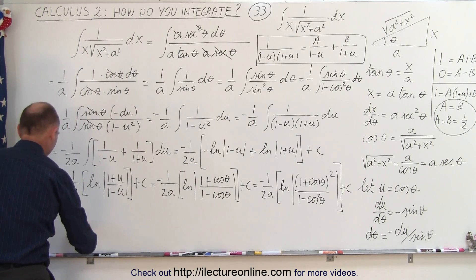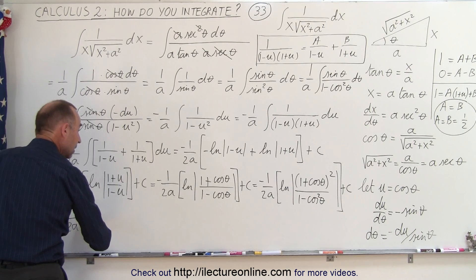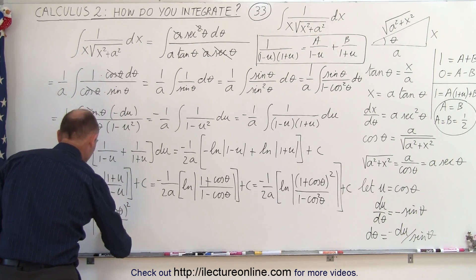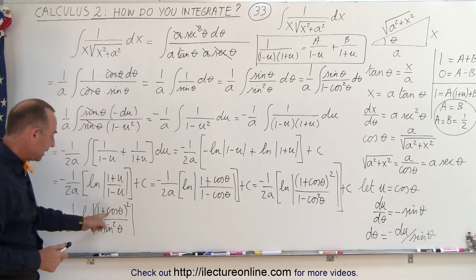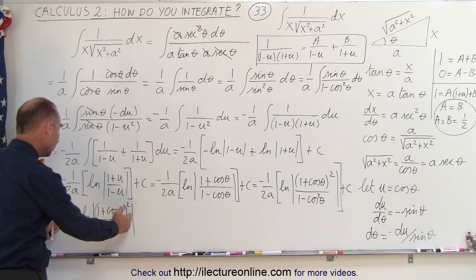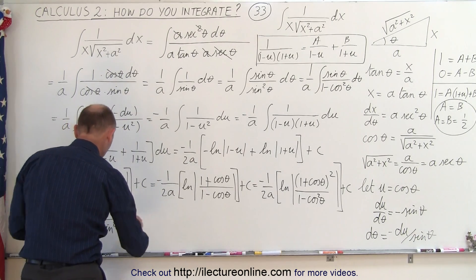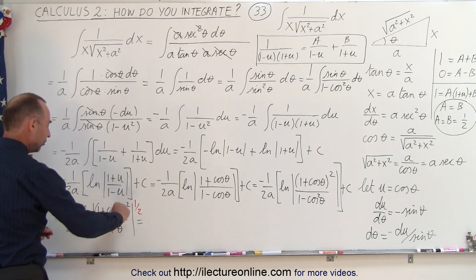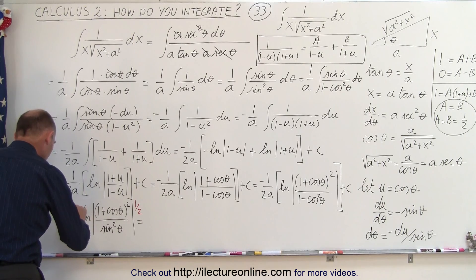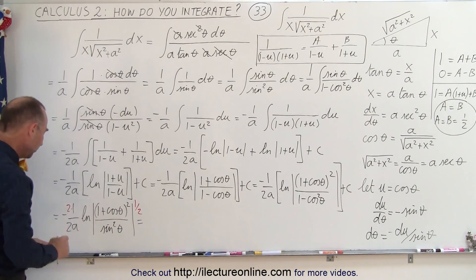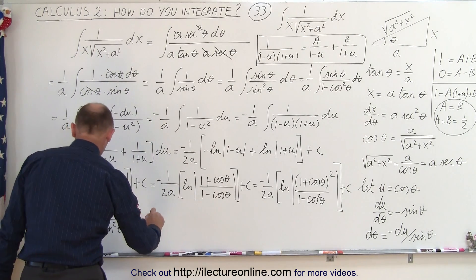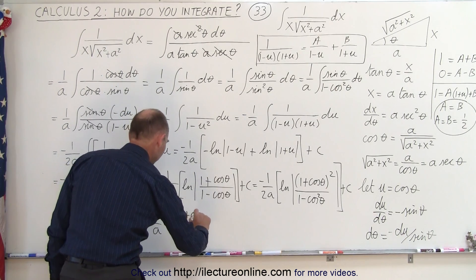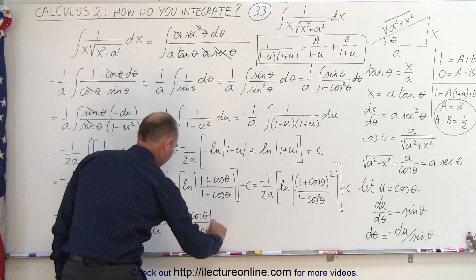So this becomes minus 1 over 2a times the natural log of (1 plus cosine theta) squared over sine squared theta. Taking the square root of both numerator and denominator and squaring outside brings a factor of 2 in front, which cancels the 2 in the denominator. This simplifies to minus 1 over a times the natural log of (1 plus cosine theta) over sine theta, plus a constant of integration.